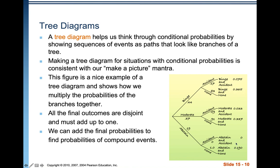All the different probabilities of the two events on each branch add up to be 1.